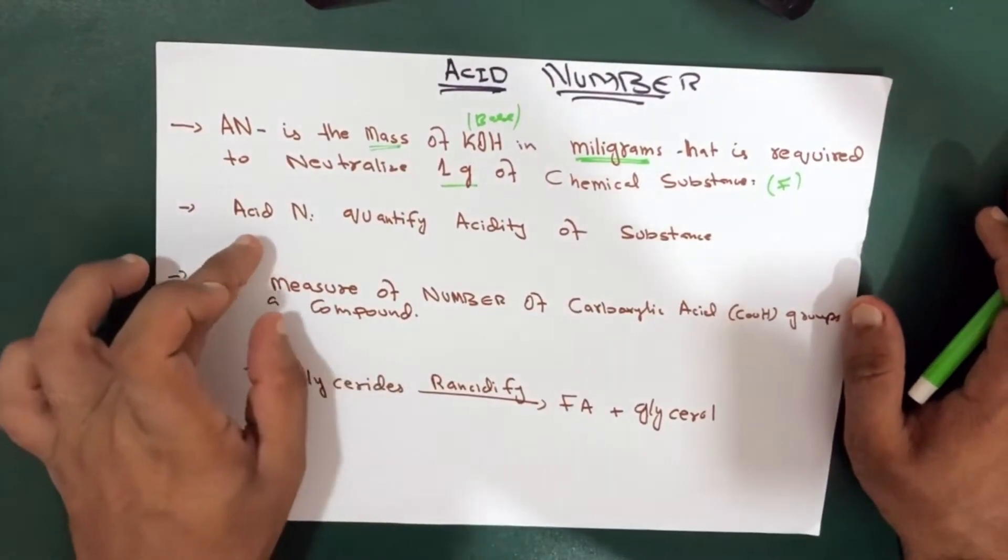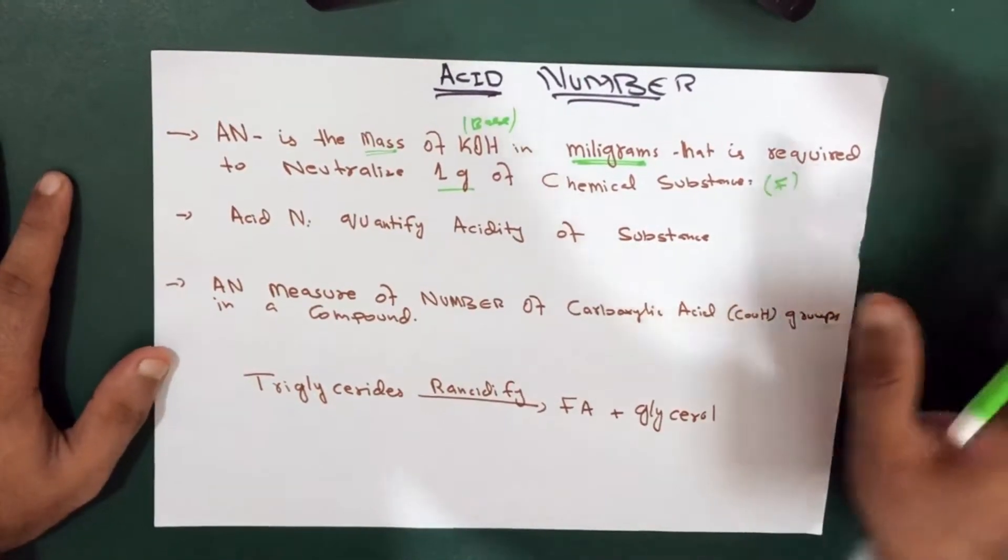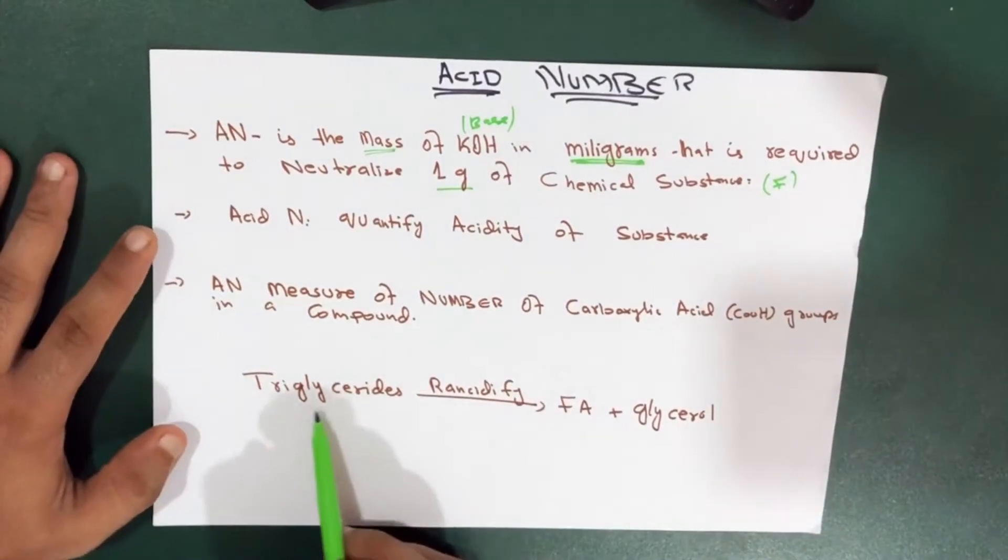So acid number is what actually quantifies acidity of a substance. So how does it actually quantify the acidity of substance? Take this example.